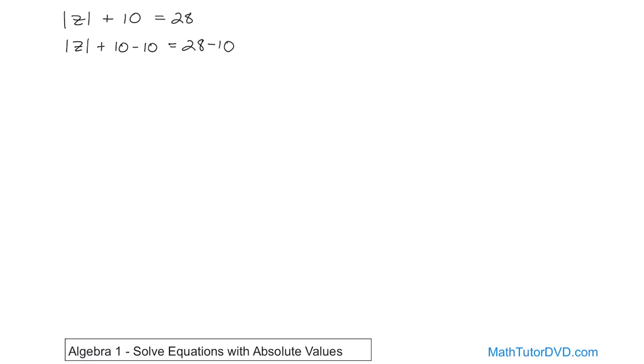So on the left hand side the tens go away giving you zero. So you have absolute value of z is equal to, what is 28 minus 10? It's a straight subtraction, that's just going to be 18.